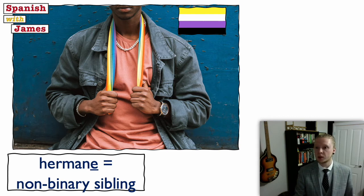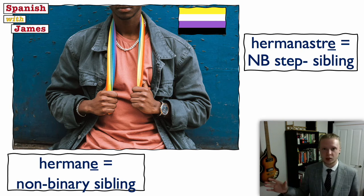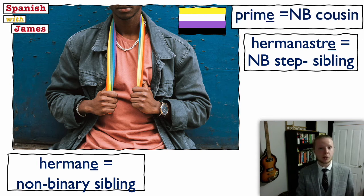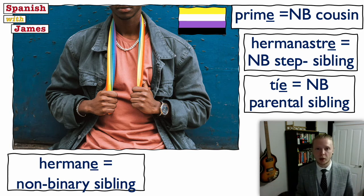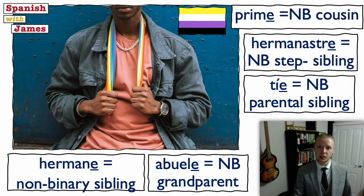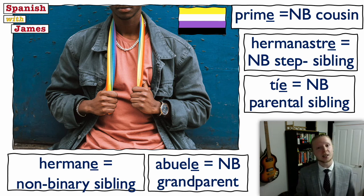If they were a step-sibling, we take the -astro/-astra ending and change it to -astre: hermanastra becomes a non-binary step-sibling. For a cousin, instead of primo or prima we could say prime. For a parental sibling — uncle, auntie — if they identify as non-binary, not tío or tía but tíe. And a non-binary grandparent we could refer to as abuele. We know the O ending, we know the A ending, we're just adding a third E ending into the mix. We can also use that with adjectives — estoy cansado (I'm tired, masculine), estoy cansada (feminine), estoy cansade (non-binary).